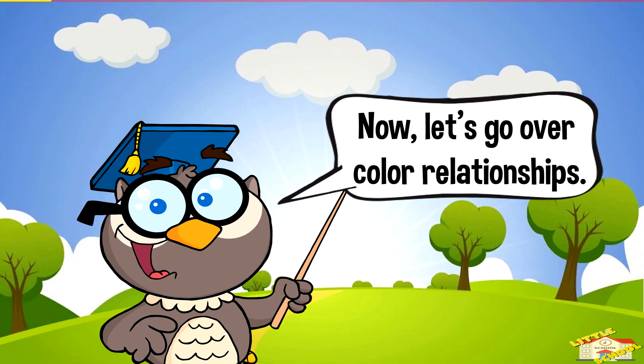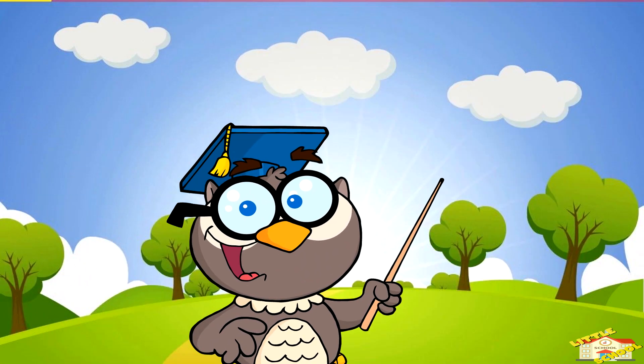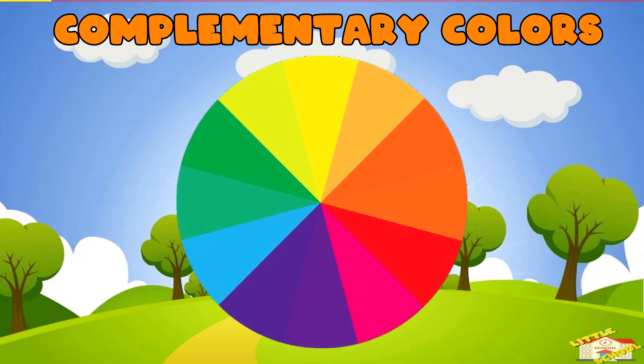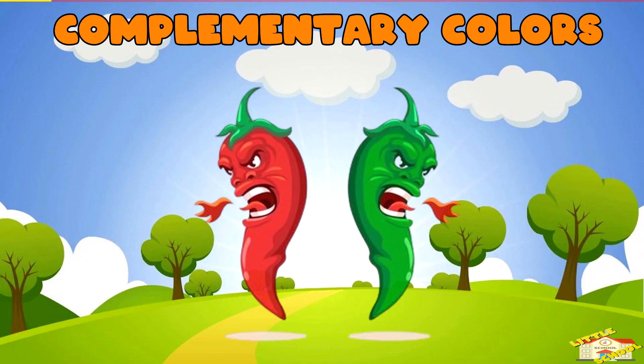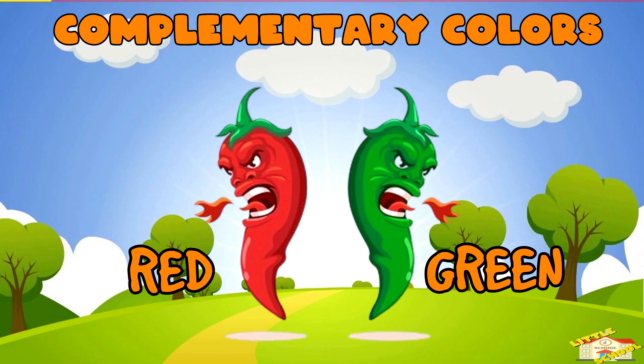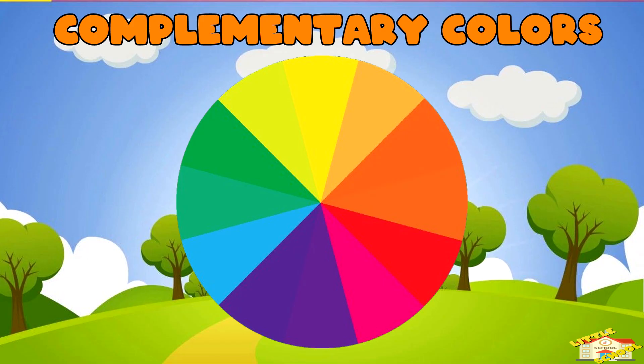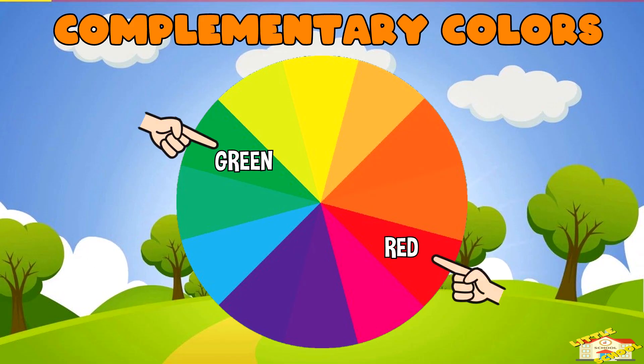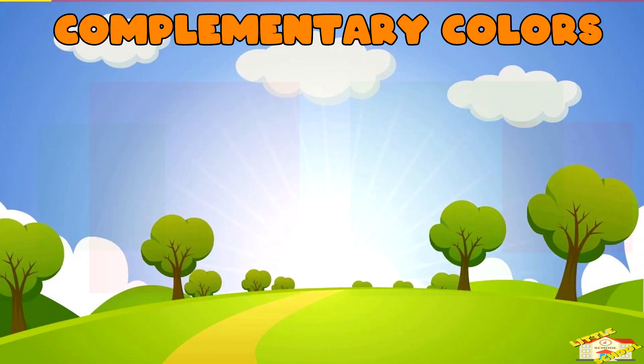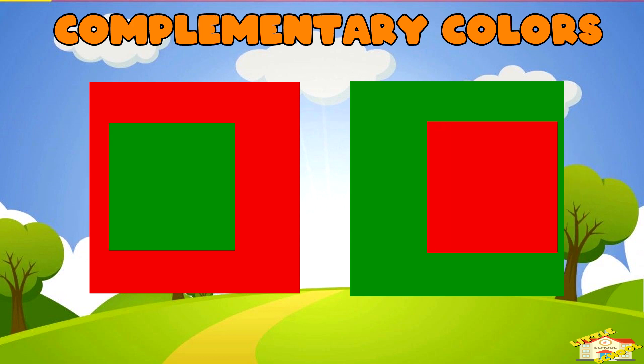Now let's go over color relationships. Complementary colors. Complementary colors are colors opposite to each other on the wheel. An example would be red and green. When paired, they create contrast.